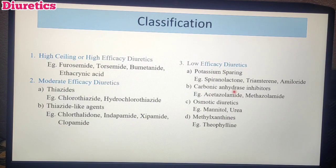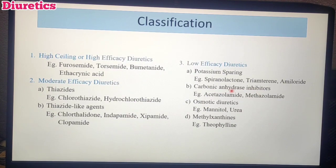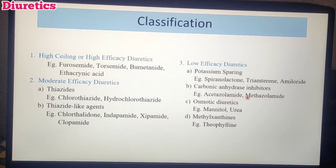Second subcategory: Carbonic Anhydrase Inhibitors. These diuretics work by blocking the carbonic anhydrase enzyme. Examples include Acetazolamide and Methazolamide. The common suffix '-azonamide' or '-azolamide' is easy to remember as a mnemonic for carbonic anhydrase inhibitors.